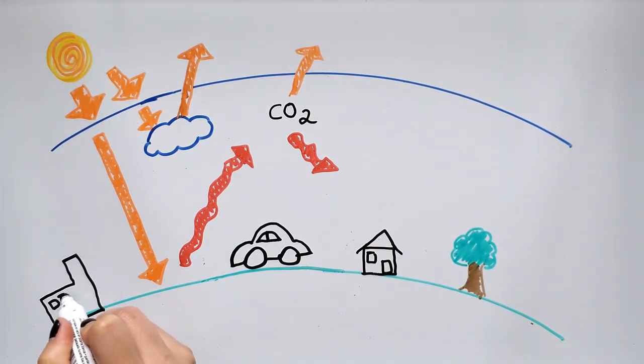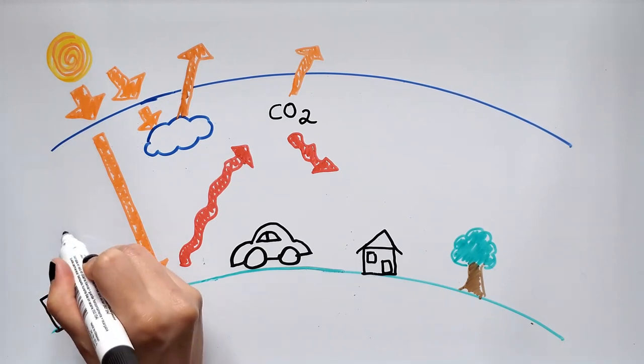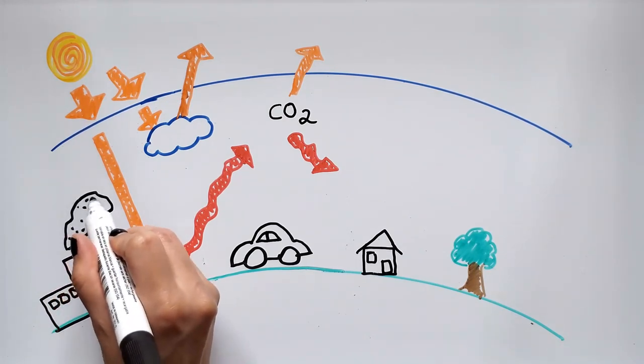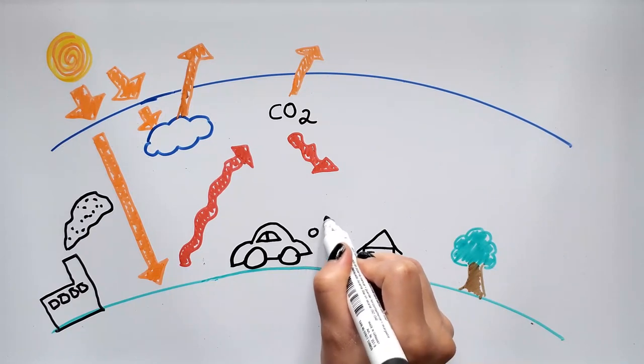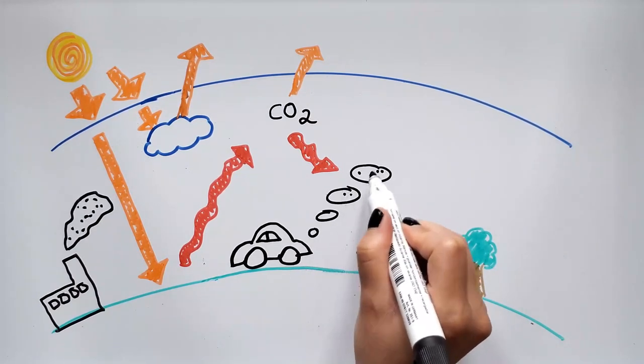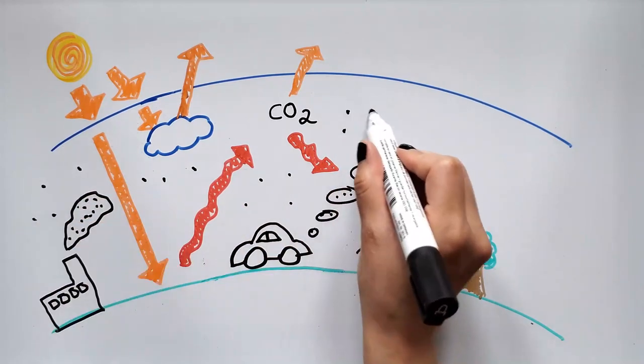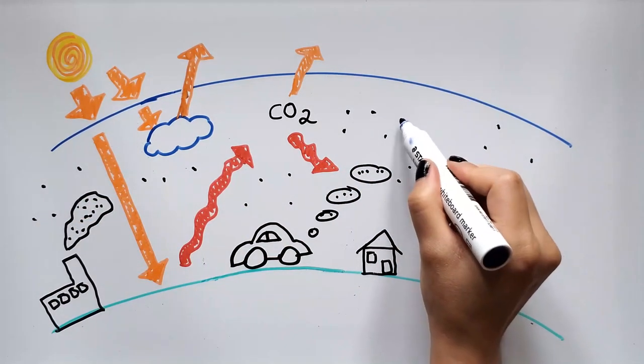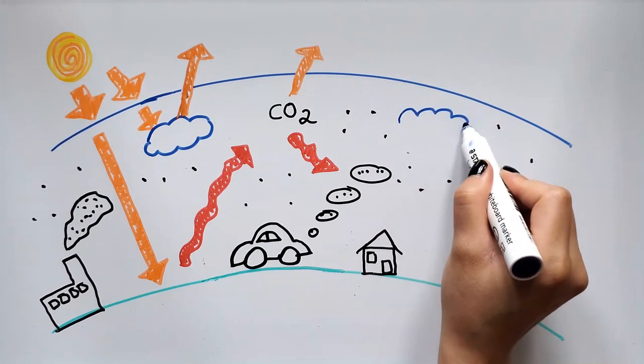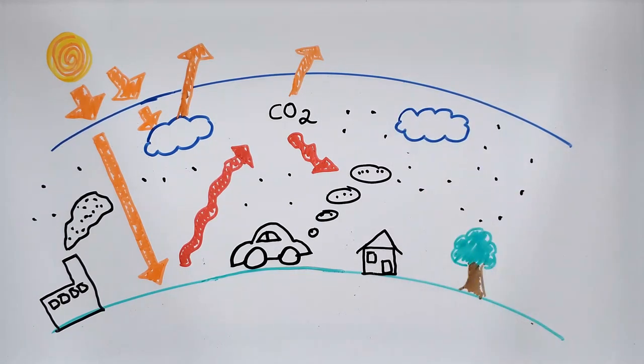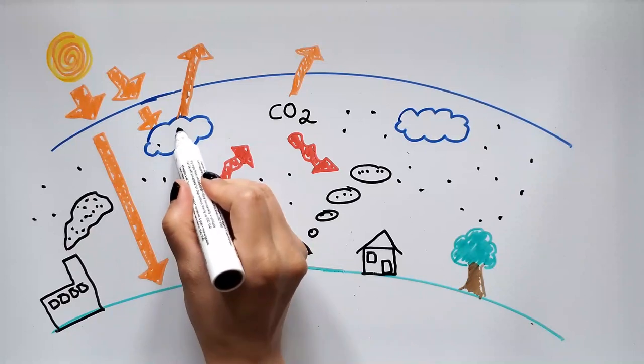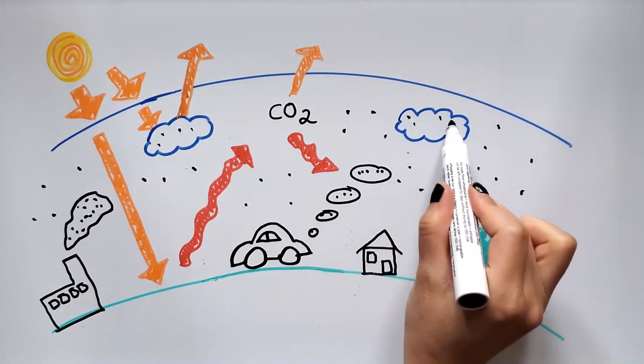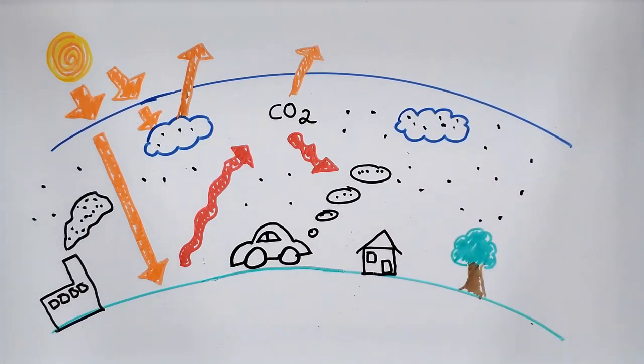Aerosols are tiny particles suspended in the atmosphere that can both absorb and reflect light. Some particles are directly emitted by plants, the sea, sand, human activity and many other sources. But the majority are actually formed directly in the atmosphere from gases. This process is called new particle formation, and under the right circumstances, the particles can grow big enough to seed cloud droplets.